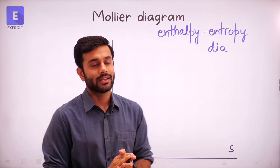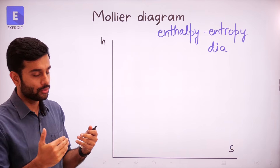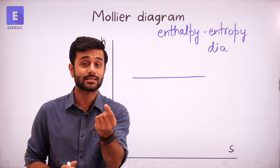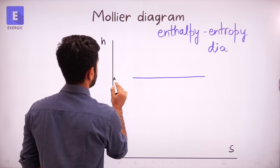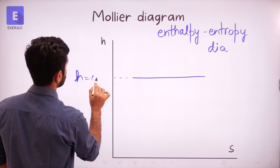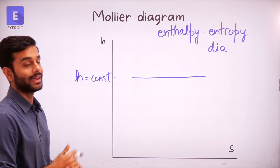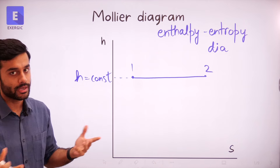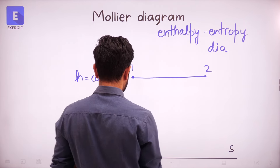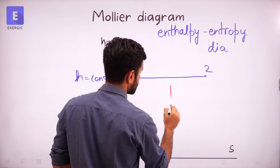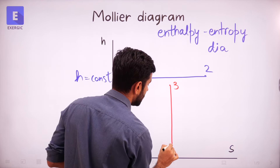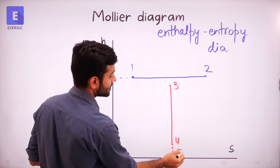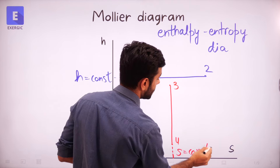In the HS diagram, a straight horizontal line represents an isenthalpic process — a line of constant enthalpy. Any process which goes horizontally is going to be an isenthalpic process. In a similar way, any vertical process is going to be an isentropic process because for that process, the value of S is going to be constant.